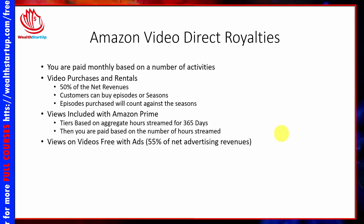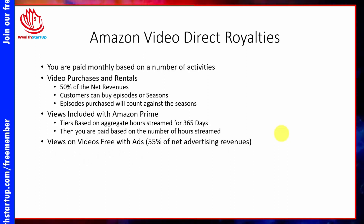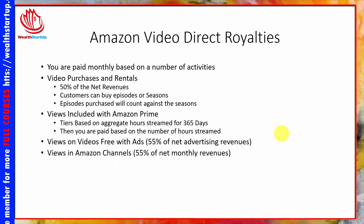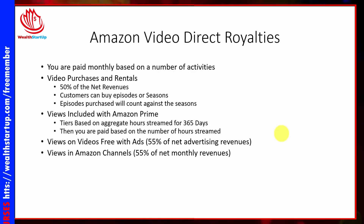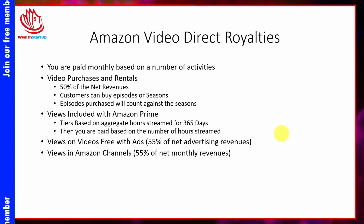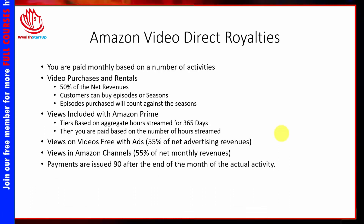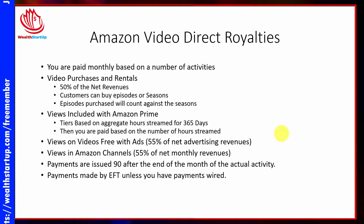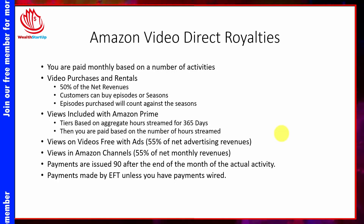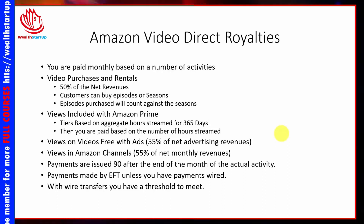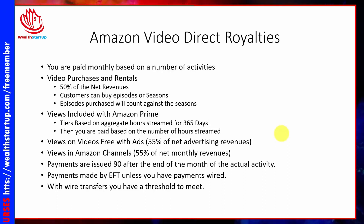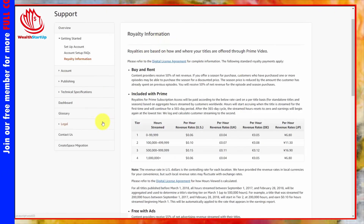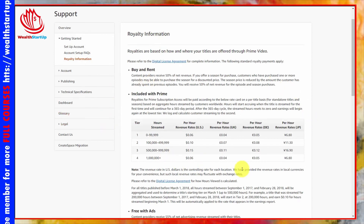You're also going to be paid 55% of the net advertising revenue from individuals who've chosen to watch videos free with ads. You'll also be paid 55% of net monthly revenues from individuals watching your videos through Amazon Channels. Payments are issued 90 days after the end of the month the activity occurs, made to your bank account unless you choose wire transfer, which has a dollar threshold to meet.